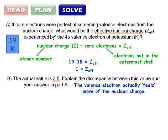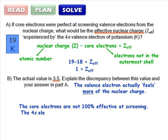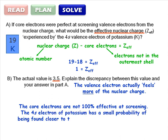Well, the core electrons are not 100% effective at screening. The 4s electron of potassium actually has a small probability of being found closer to the nucleus than the core electrons.